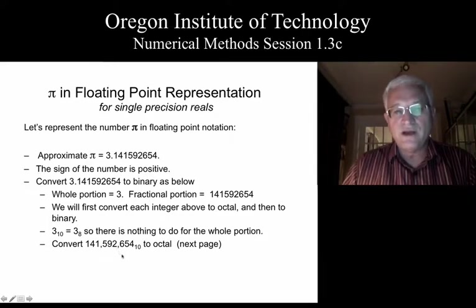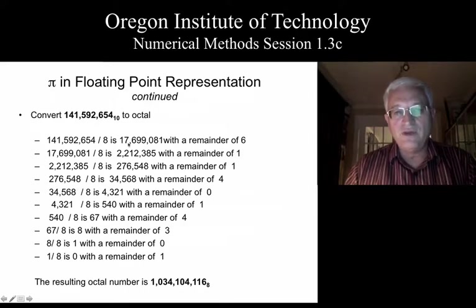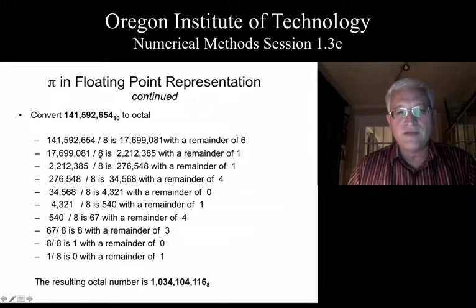We already know how to do that from two sessions ago. We set up a series of divisions by 8, computing the whole number in the division, in other words, the truncated portion of the division, and we would take the remainder and record it off to the right. And we kept taking this truncated version and repeating the process, dividing by 8, keeping the whole portion and recording the remainder.